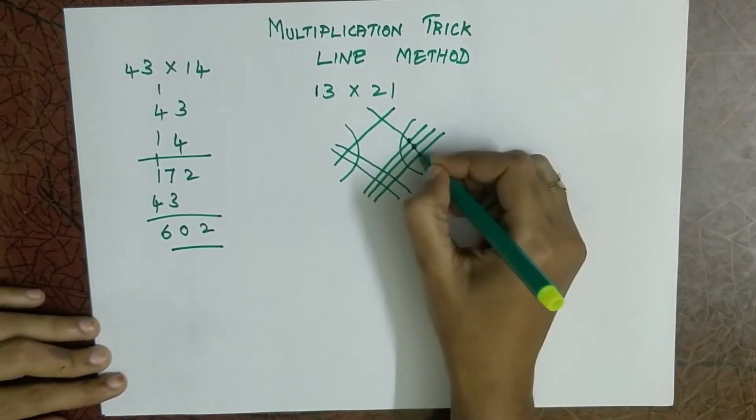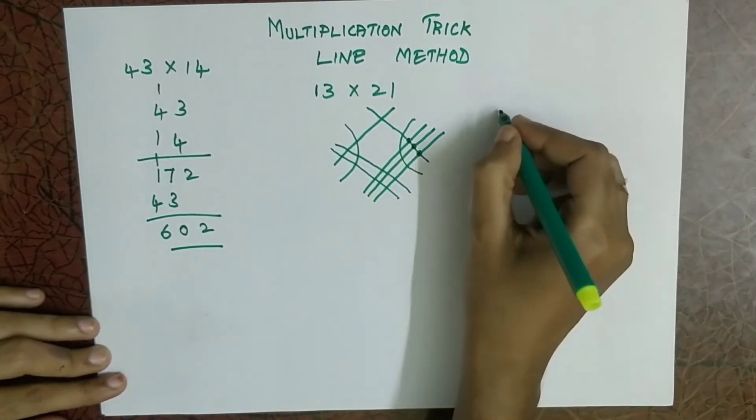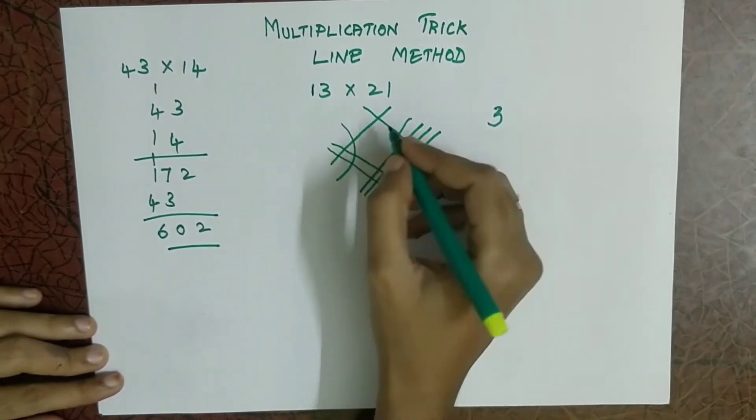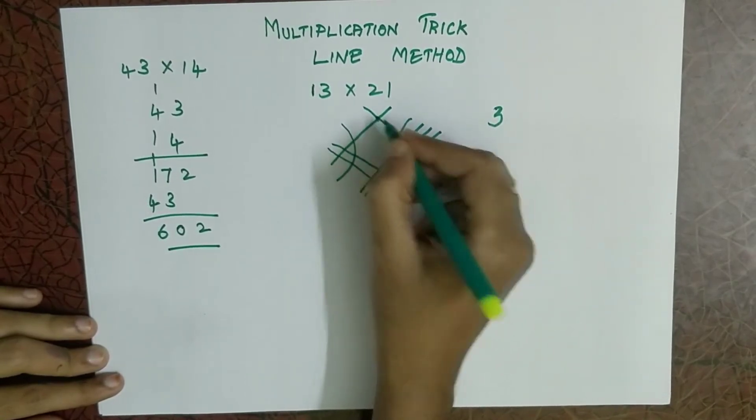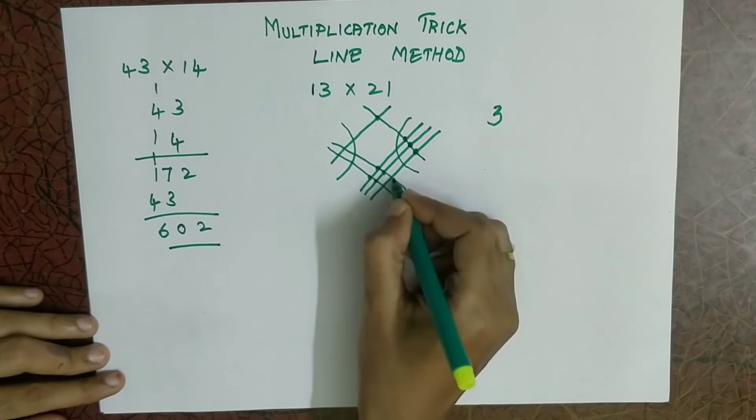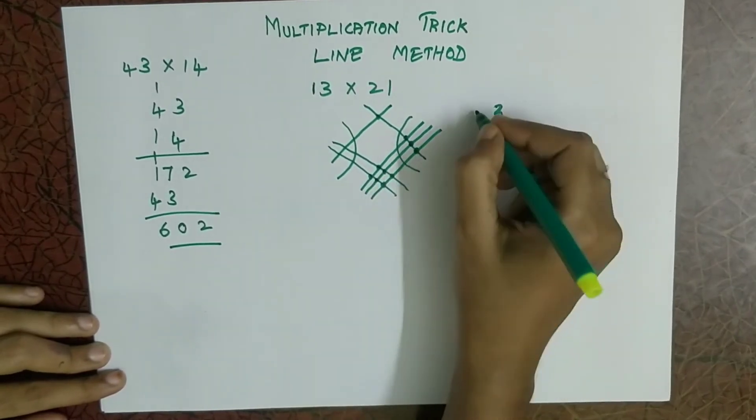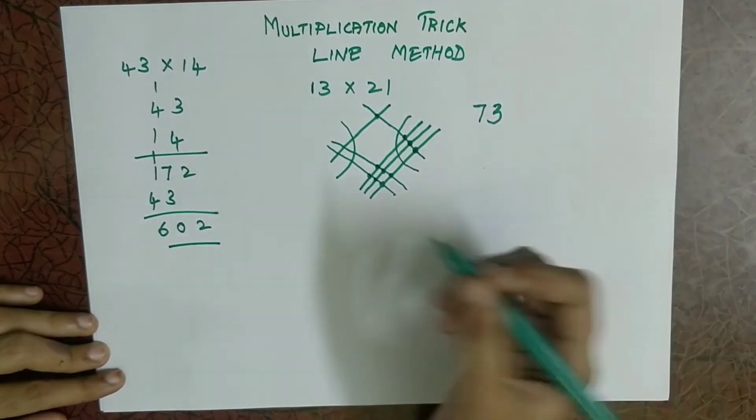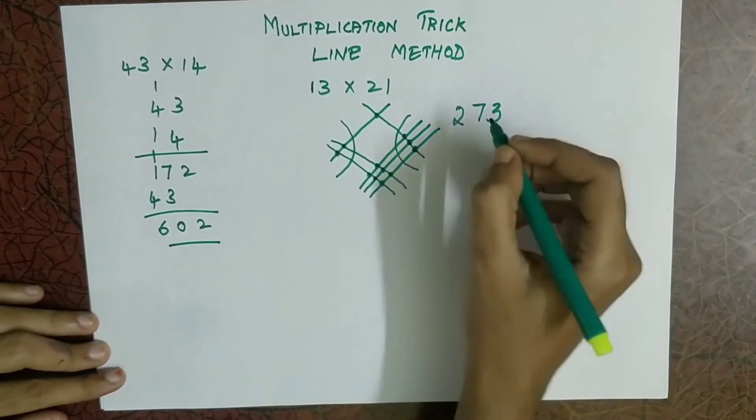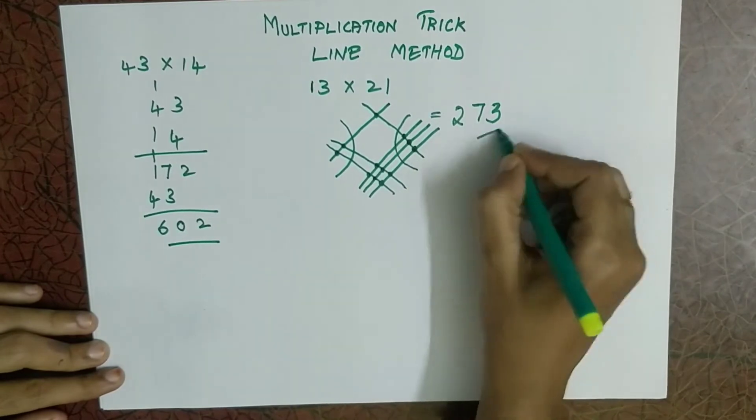1, 2 and 3. So this will be your last number. Then you have to count all the middle lines. 1, 2, 3, 4, 5, 6 and 7. So the next number is 7. Now this side, 1 and 2. So 2. So your answer is 273.